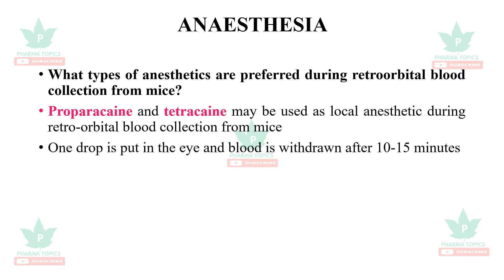What anesthetics are preferred during retroorbital blood collection in mice? Proparacaine and tetracaine may be used as local anesthetics — one drop is put in the eye and the blood is withdrawn after 10 to 15 minutes. As per new guidelines, retroorbital blood collection is not allowed nowadays.